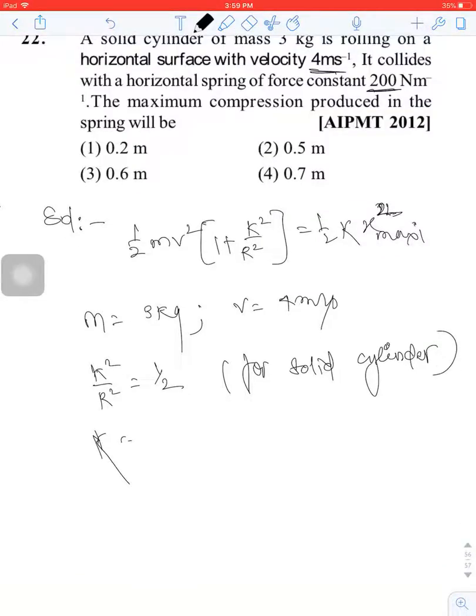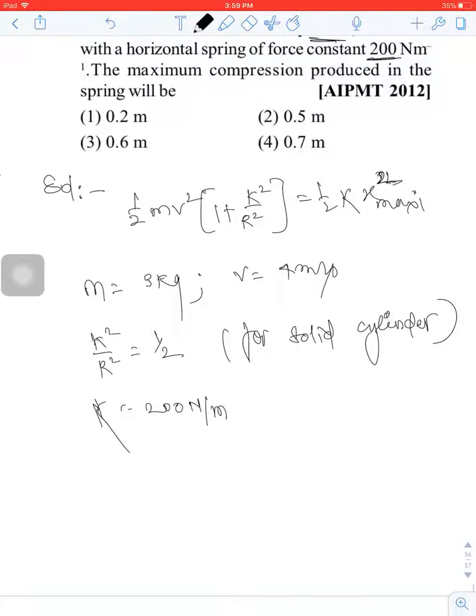The value of k is 200 Newton per meter. So x maximum will equal... The 1 by 2 terms cancel out, giving mv squared times 1 plus k squared upon r squared divided by k.